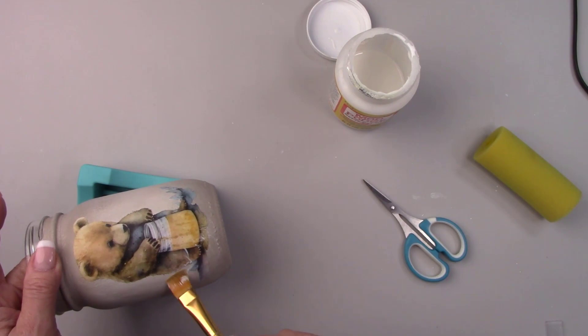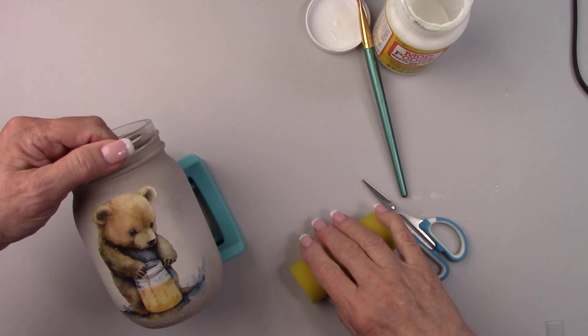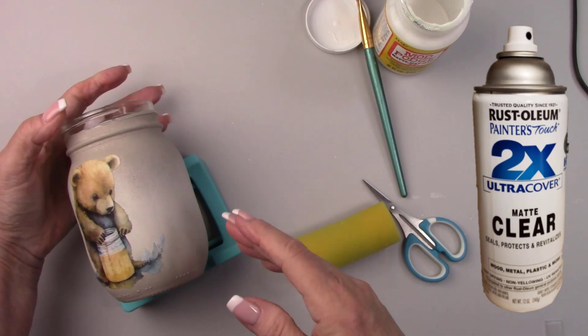Now I'm using a round sponge and rolling it over the image to press out any air bubbles and make sure it's attaching to the jar properly. I let that dry for a little bit and then sprayed the jar with clear matte sealer to protect the image. I just love this little bear. I think he is so cute.